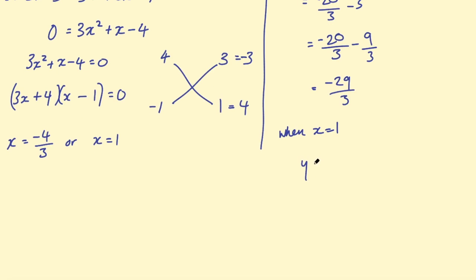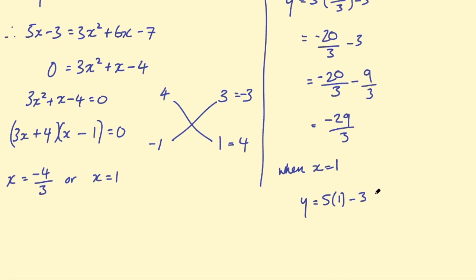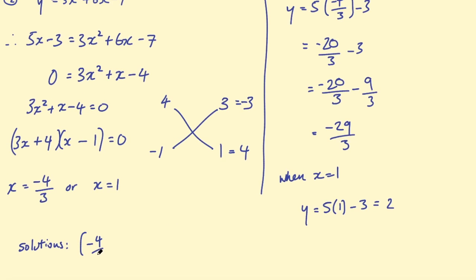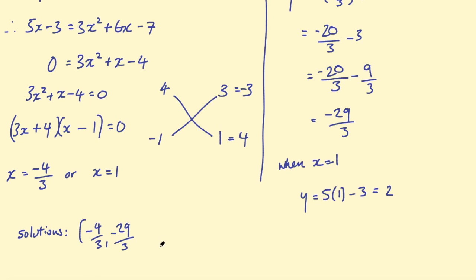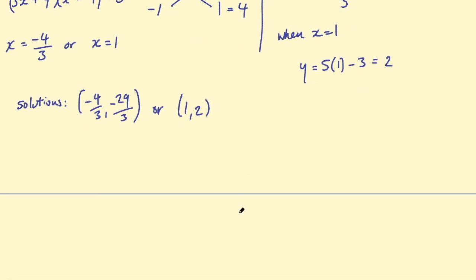Then when x equals 1, y equals 5 times 1 minus 3, which is 5 minus 3, which is 2. So my two solutions are x equals minus 4 over 3 and y equals minus 29 over 3, or x equals 1 and y equals 2. You can write them as mixed fractions or decimals if you prefer.